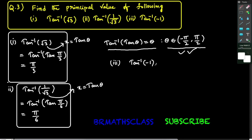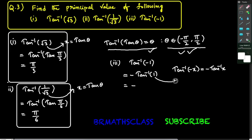Find the principal value of tan inverse of minus 1. This is of the form tan inverse of minus x. From inverse trigonometry, we know that tan inverse of minus x equals minus tan inverse x. Applying this formula, tan inverse of minus 1 equals minus tan inverse of 1. I want to write 1 in the form of tan θ to use the formula.